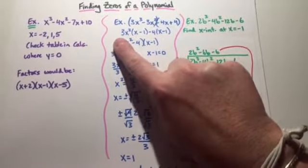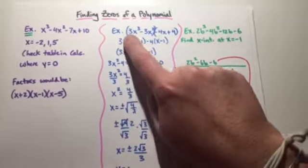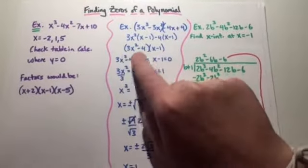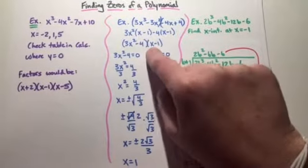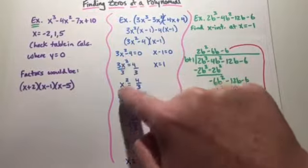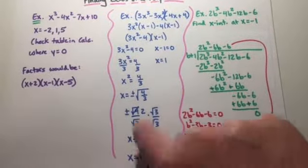I took out 3x² of the first two terms and I took out -4 from the second two terms. And then I had 3x² - 4, x - 1 are my factors. But when I set them equal to 0 and solve to get the zeros, I get x = 1 pretty easy.